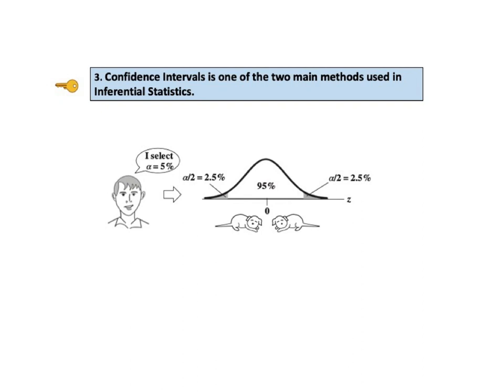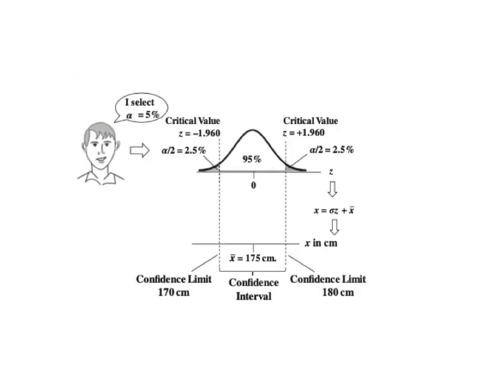The boundaries of the two shaded areas give us essential information. The inner boundaries are called the critical values of the test statistic. Between these boundaries is an interval in units of the test statistic — z in this example. We need to convert it to units of the original data — centimeters — in order to get confidence limits which define the confidence interval. We use the formula for the test statistic to make this conversion, as shown in the illustration.